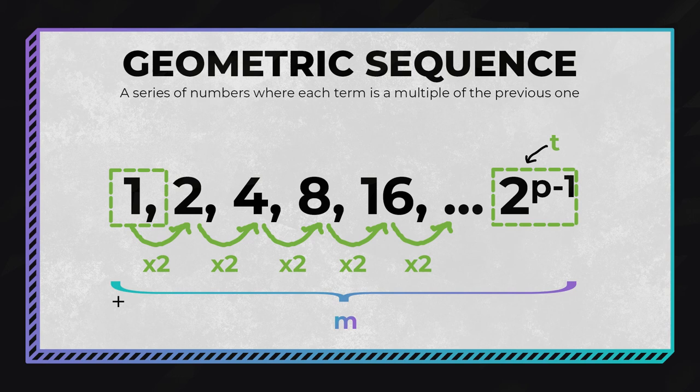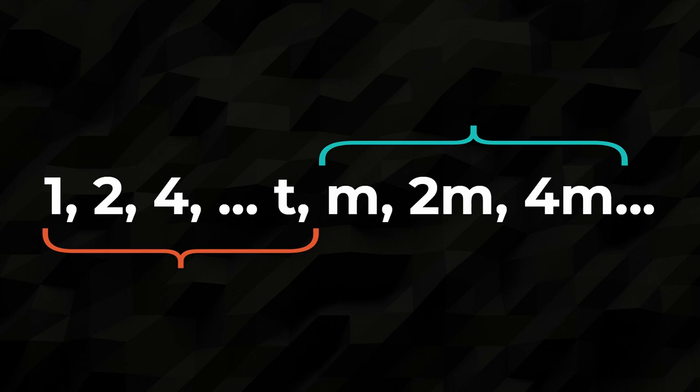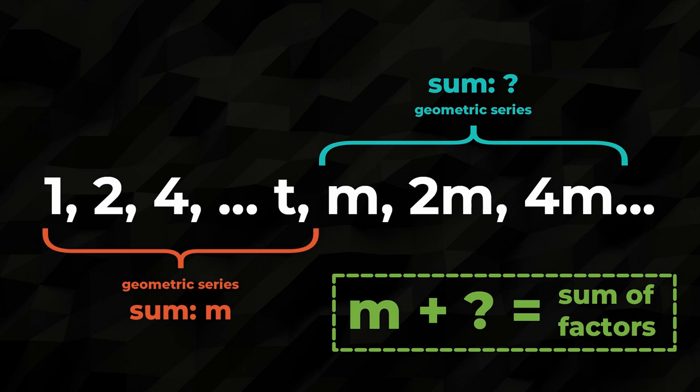So, if we can represent the terms of part t as a geometric sequence, could we do the same thing for all of the factors of our perfect number template? Well, it turns out we're halfway there. Remember, the factors of a perfect number are either ascending powers of 2 or ascending powers of 2 times a Mersenne prime, both of which are geometric series, and we already know the sum of the first one, part m. So, if we can find the sum of the second one, we can add both sums together to find the total sum of the factors of this expression, hopefully proving that it will equal the expression itself.